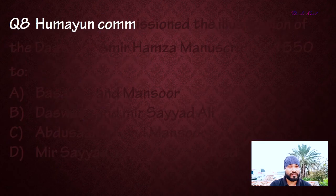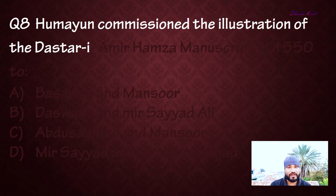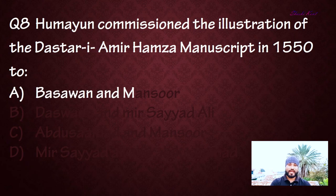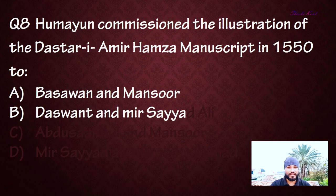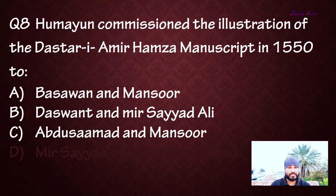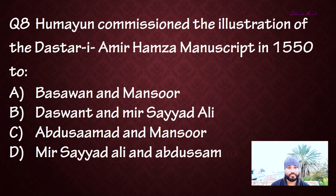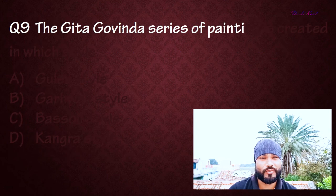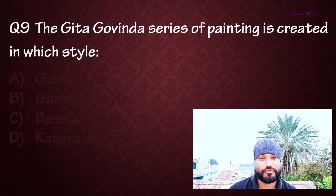Question number eight: Humayun commissioned the illustration of the Daastaan-e-Amir Hamza manuscript in 1552. Who were the artists? Option A: Baswan and Mansoor, Option B: Daswan and Mir Sayyid Ali, Option C: Abdus Samad and Mansoor, Option D: Mir Sayyid Ali and Abdus Samad. The right answer is D: Mir Sayyid Ali and Abdus Samad.